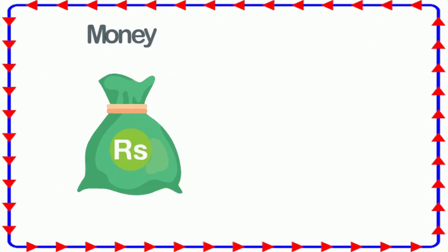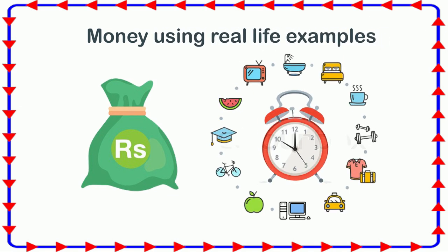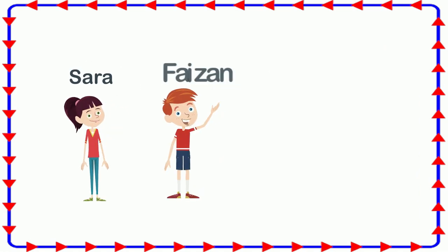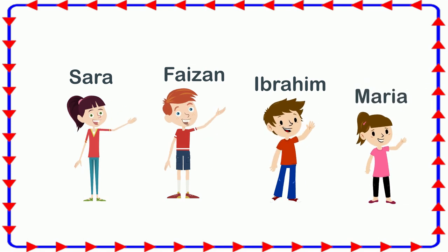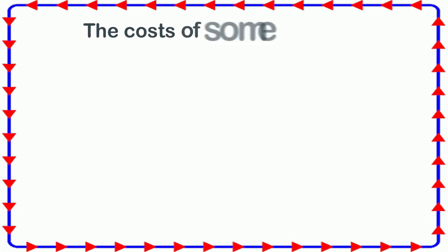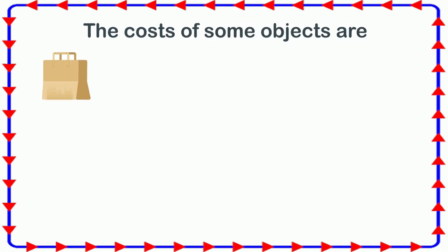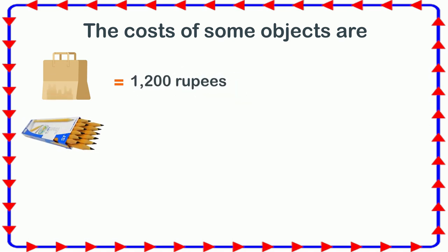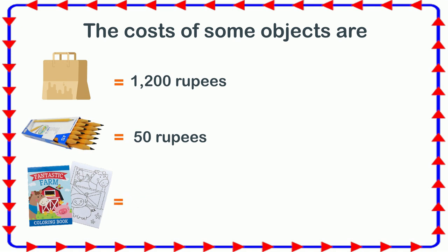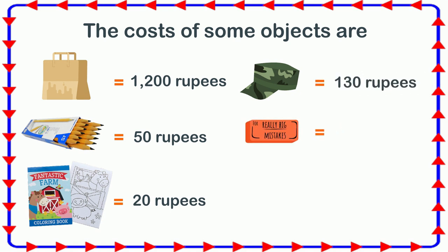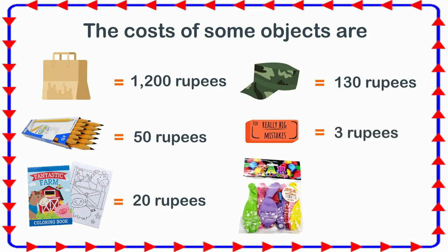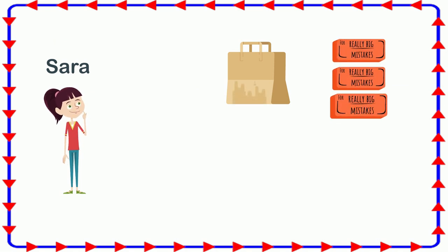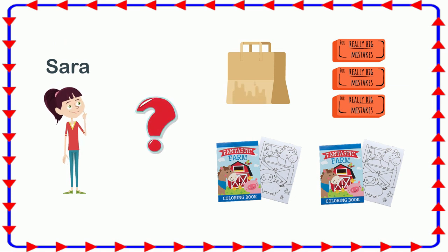Let's learn some more about money using real-life examples. Suppose Sarah, Faizan, Ibrahim and Maria go to a market to buy some things. The costs of some objects are: a bag costs 1200 rupees, a box of pencils costs 50 rupees, a colouring book costs 20 rupees, a hat costs 130 rupees, an eraser costs 3 rupees, and a pack of balloons costs 30 rupees. Sarah buys a bag, 3 erasers, and 2 colouring books. How much does it all cost her?